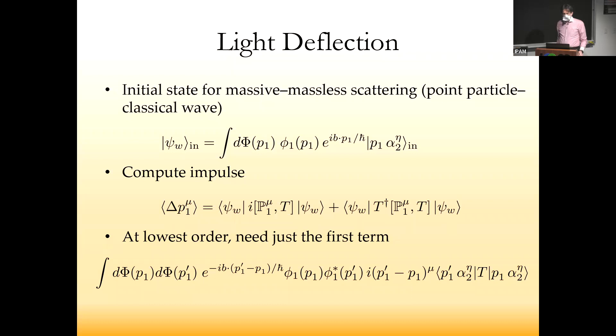Let's look at one example—the first classic calculation in general relativity: light deflection. We're going to look at massive-massless scattering, or in classical language, a classical wave scattering off a point particle. We build an initial state the same way as for two incoming point particles, except we have a wave function and integral over on-shell phase space for the point particle, and a coherent state alpha two for the classical wave, with some impact parameter.